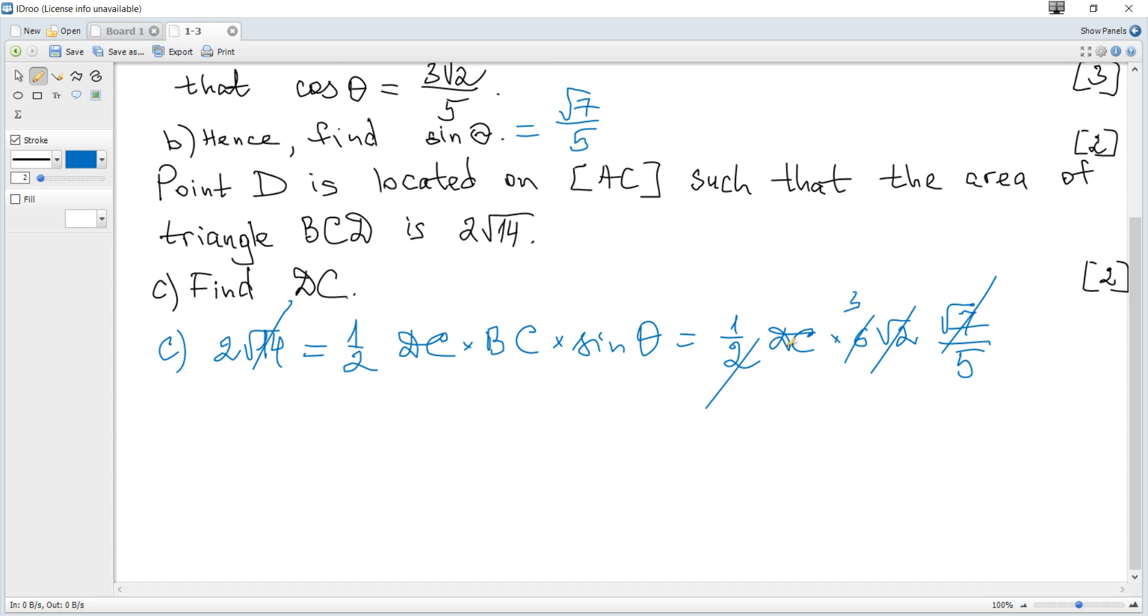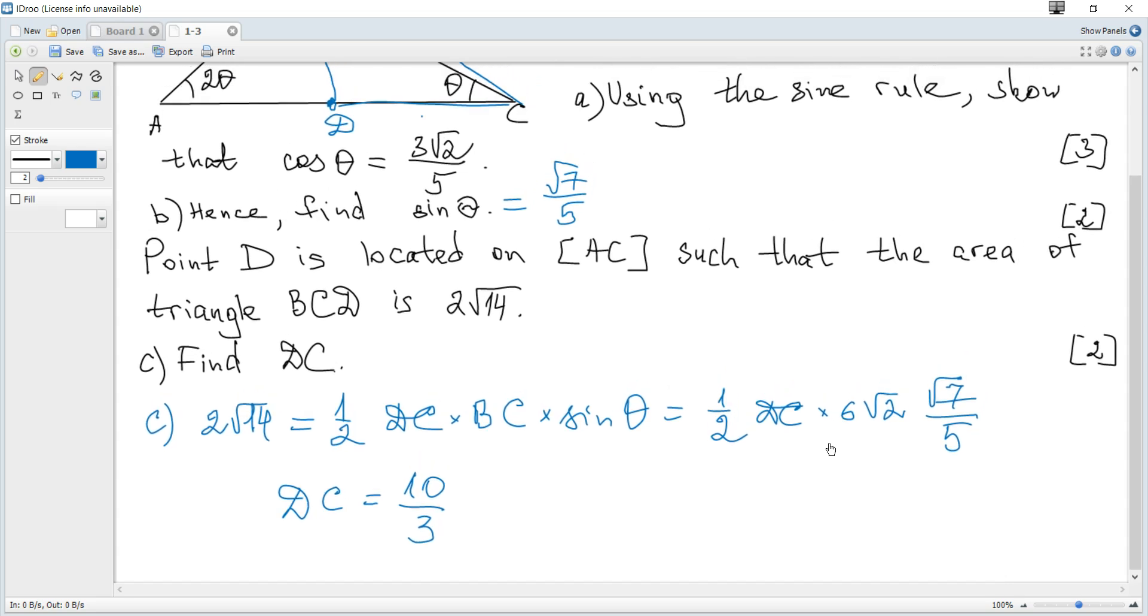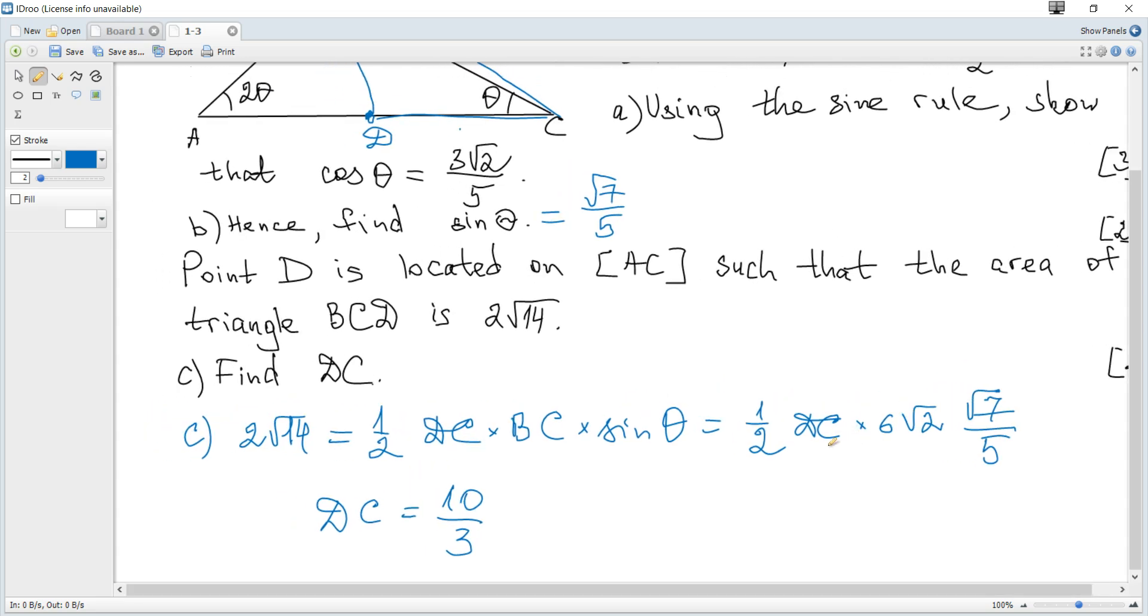So DC is just multiply both sides by 5 and divide by 3, so it becomes 10 over 3. And that's all for this question.